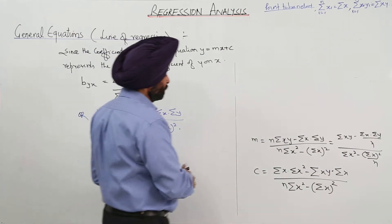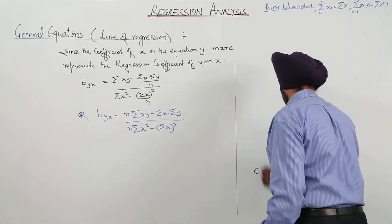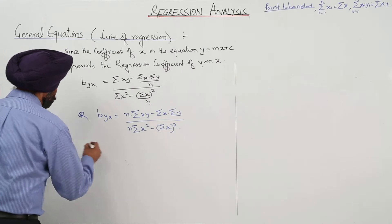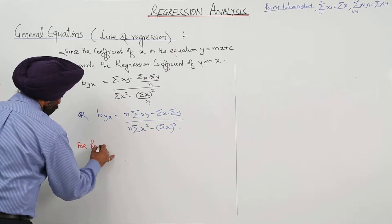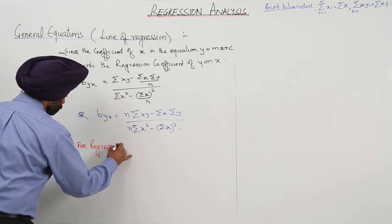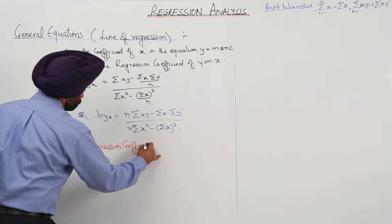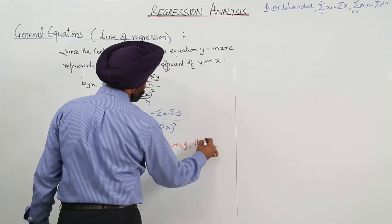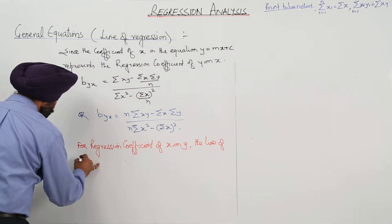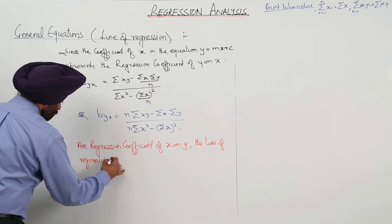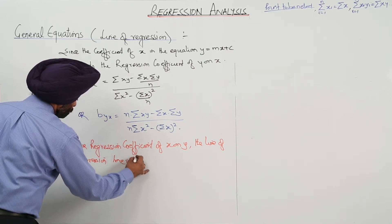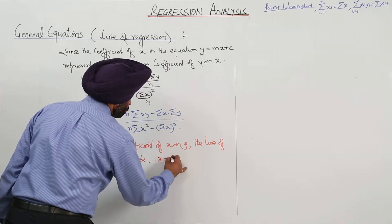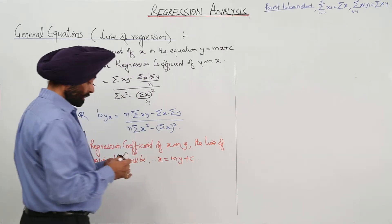Now for the second part, what we are having? For regression coefficient of x on y, the line of regression coefficient of x on y, the line will be x equals m y plus c.